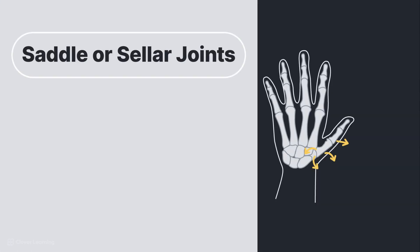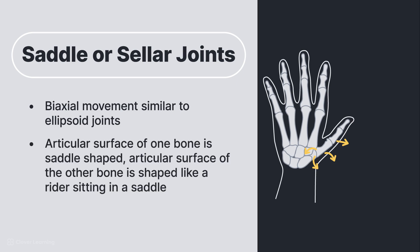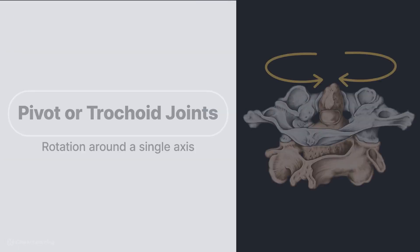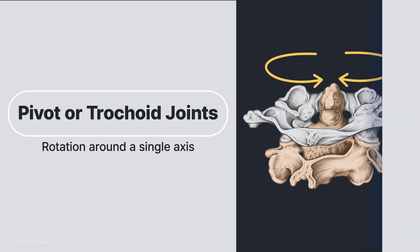Saddle, or cellar joints, have biaxial movement similar to ellipsoid joints, but the articular surface of one bone is saddle-shaped, and the articular surface of the other bone is shaped like a rider sitting in a saddle. The carpometacarpal joint between the trapezium and first metacarpal is the only saddle joint in the body. Pivot, or trochoid joints, involve rotation around a single axis, where one bone with a rounded or pointed surface articulates within a ring formed partially by the other bone. The proximal and distal radio-ulnar joints and atlas and axis of the cervical spine are examples of pivot joints.